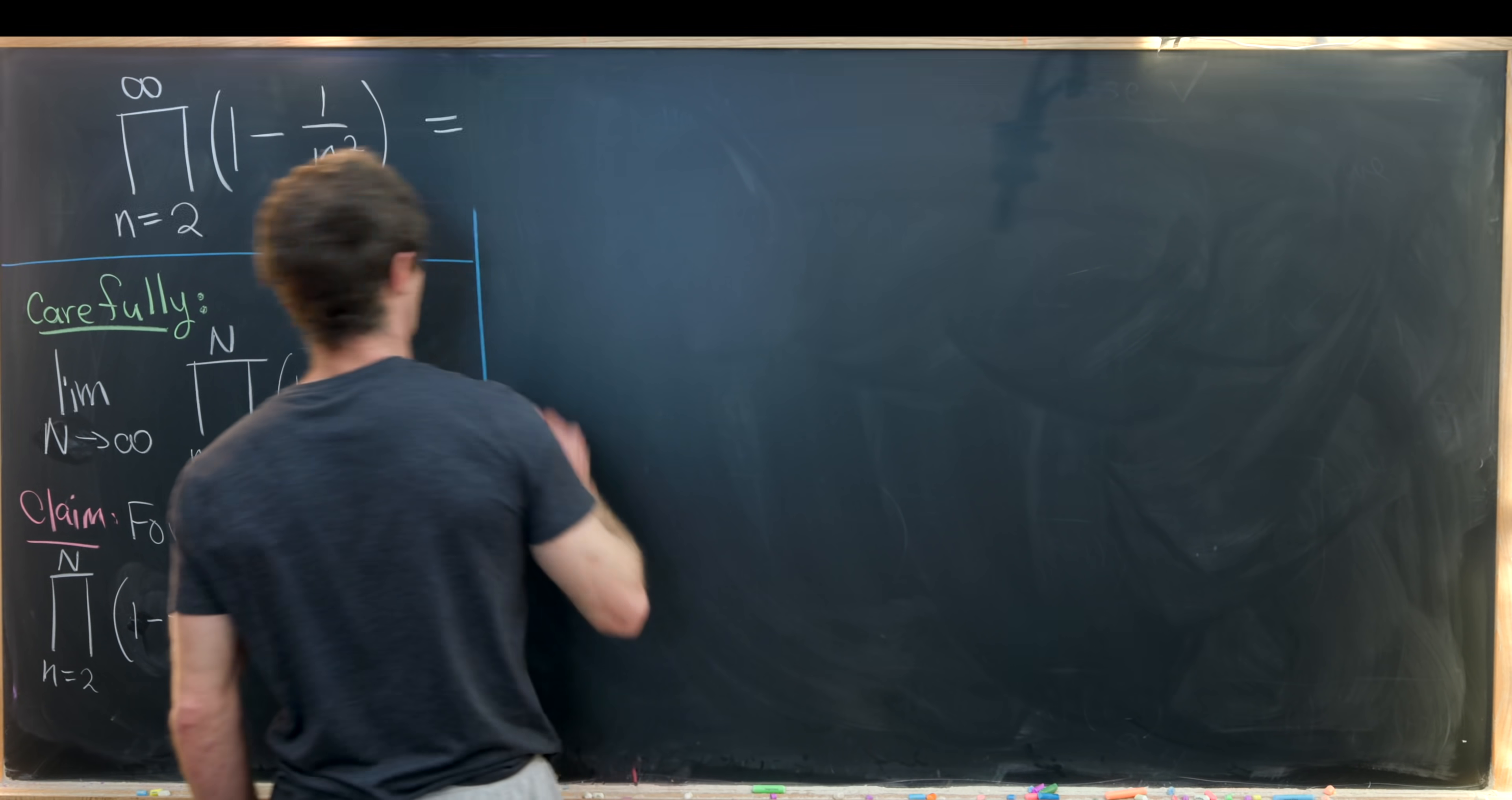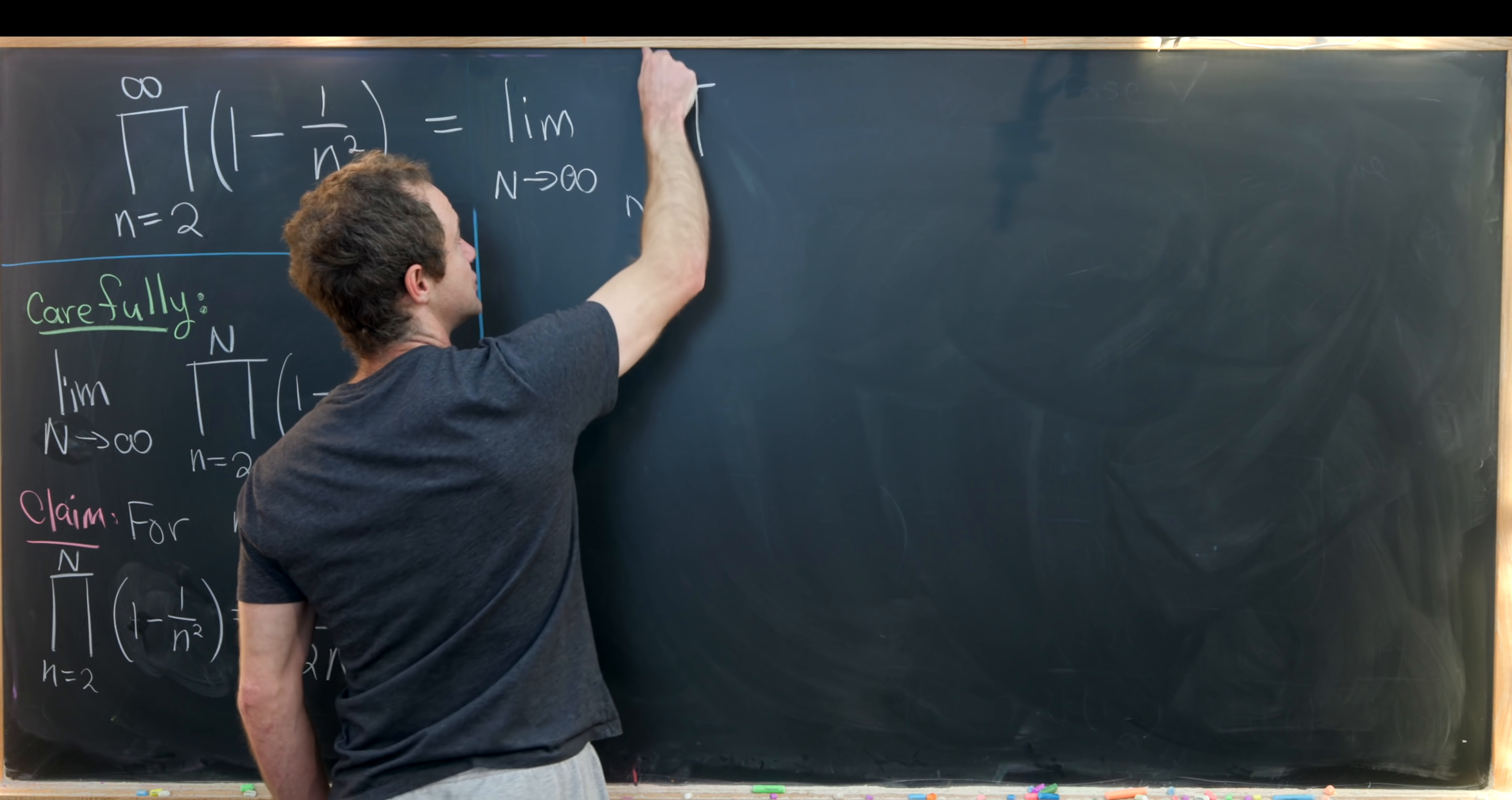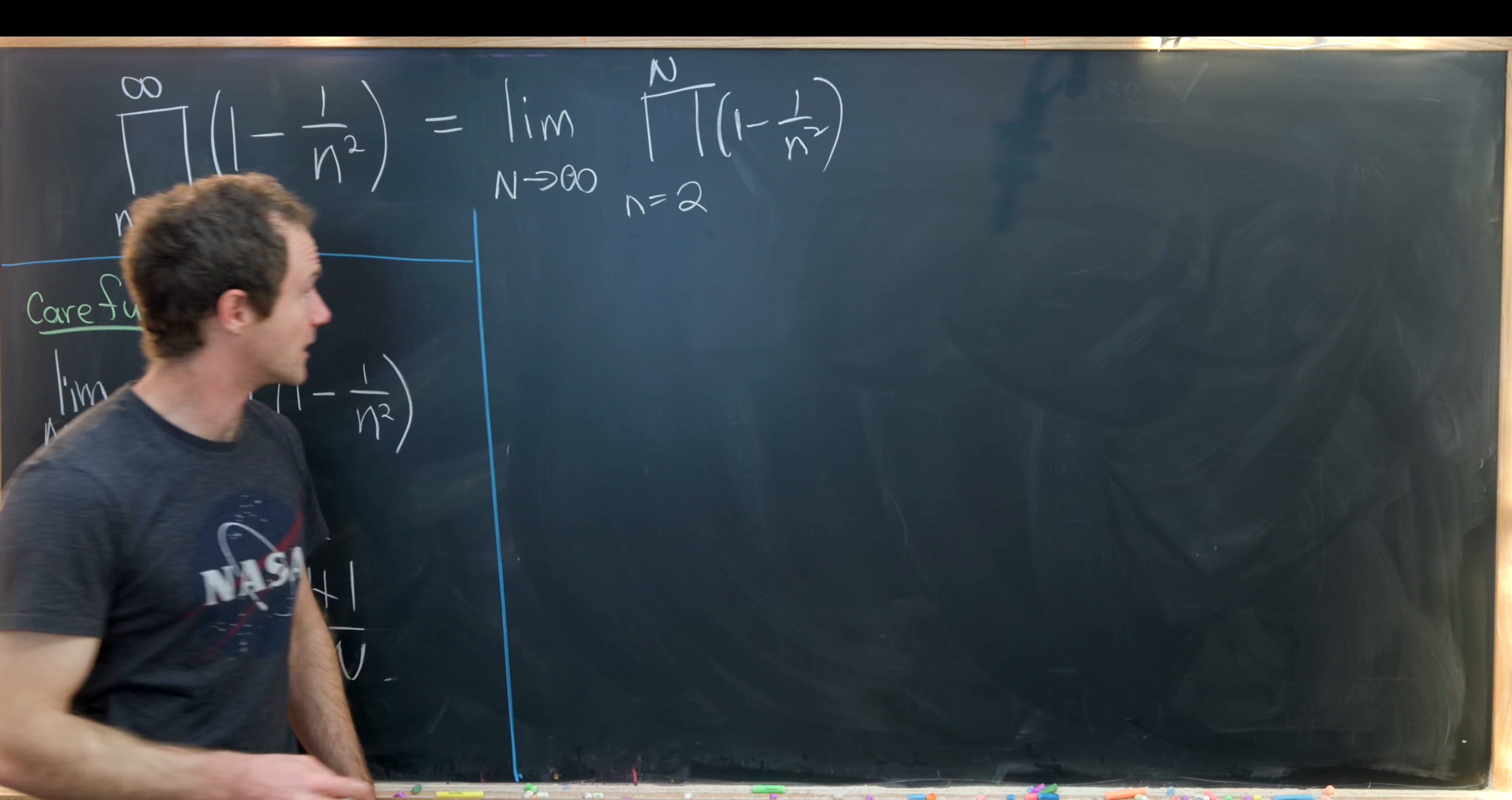So I'll take this infinite product and rewrite it as the limit as capital N goes to infinity of this nth partial product. So that'll be the product as n goes from 2 up to capital N of 1 minus 1 over n squared. And I guess I should say this definition only holds if this limit exists in the first place. We kind of brushed over that though.